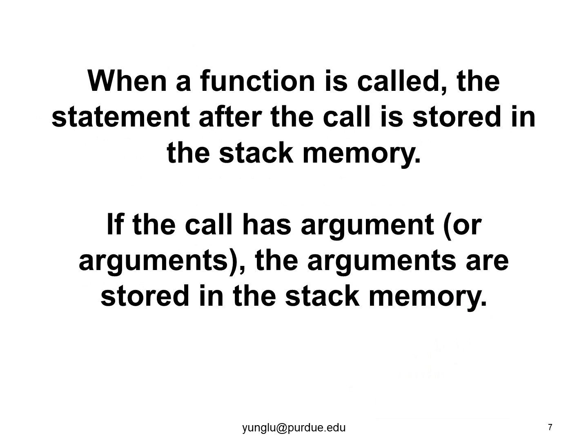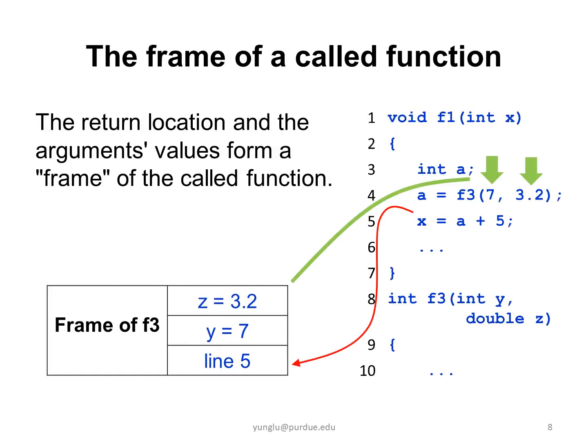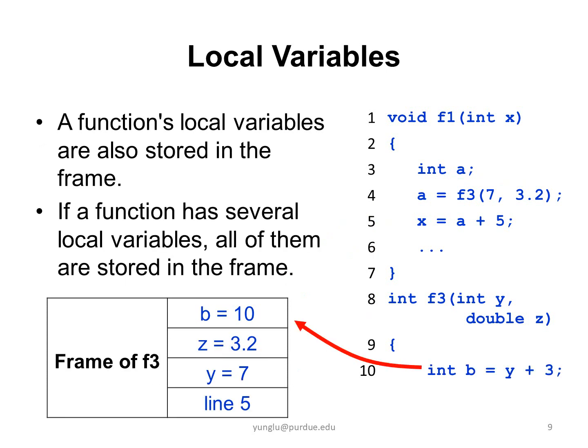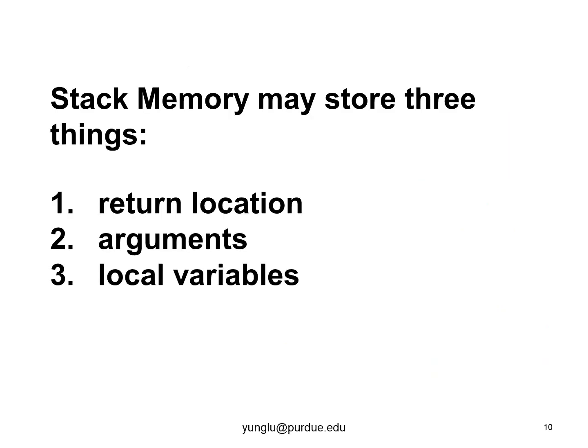Now let's review what we have learned so far about the stack memory. For each function call, the stack memory stores the return location and the argument values. These two pieces of information are called the frame of the called function. As you can see in this example, a frame of F3 includes the information about the return location and the argument values. Next, we consider the called function's local variable or variables. The local variable is also stored in the stack memory. The stack memory can have three things: the first is the return location, which is the line number after the function call; the second is argument or arguments, which is the input to the function; and the third is the local variable or variables.